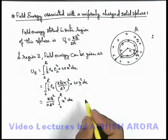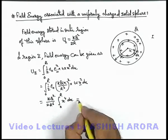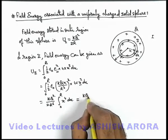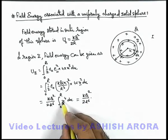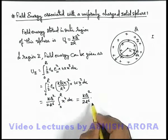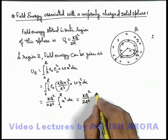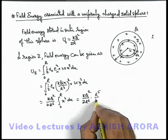Now if we integrate it you can see we are getting kQ² by twice of R to power 6 multiplied by, integration of x⁴ is x⁵/5, on substituting limits we are getting R⁵ by 5.